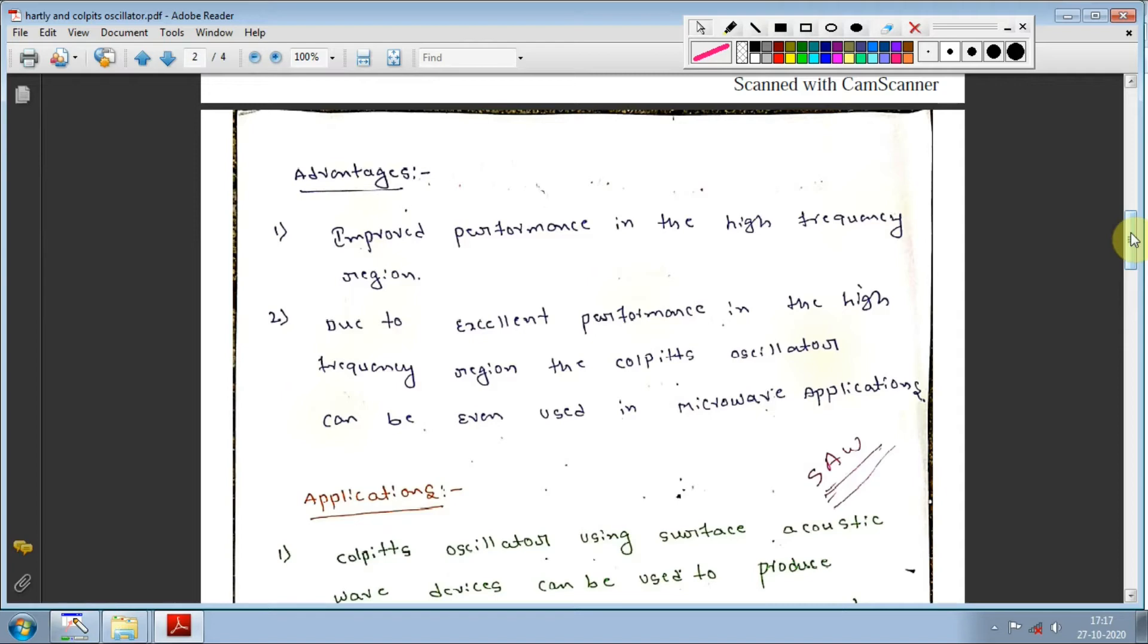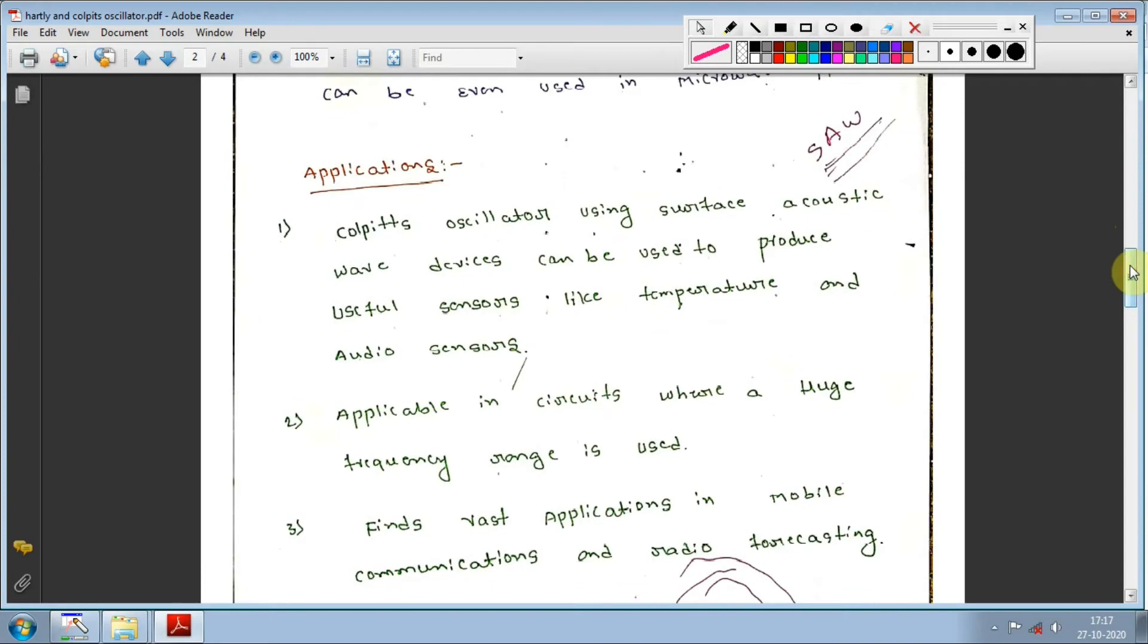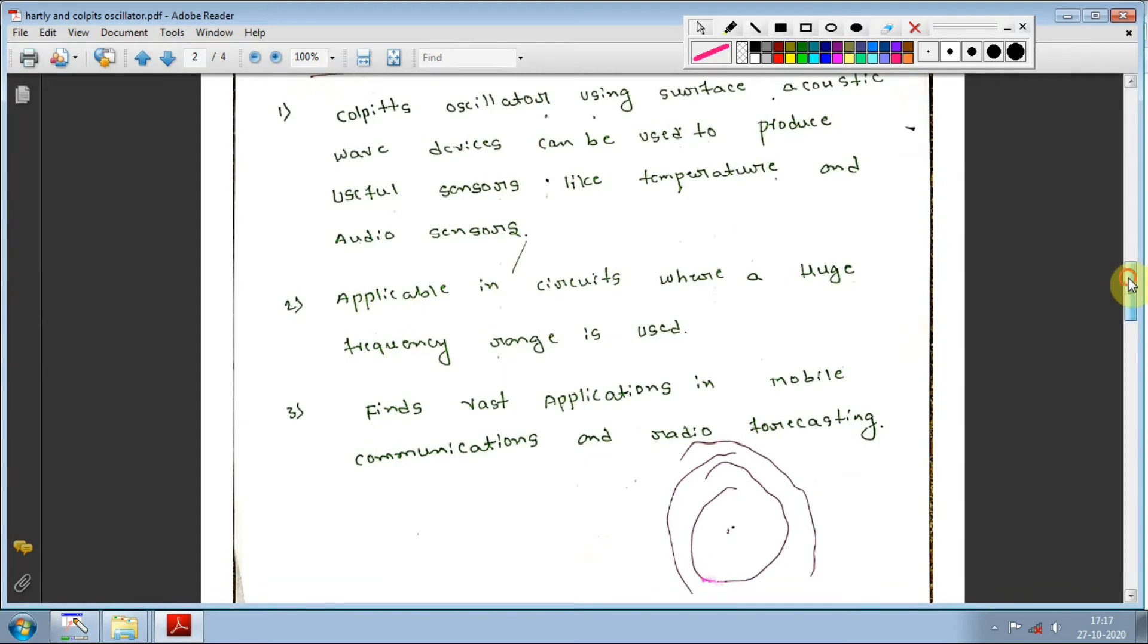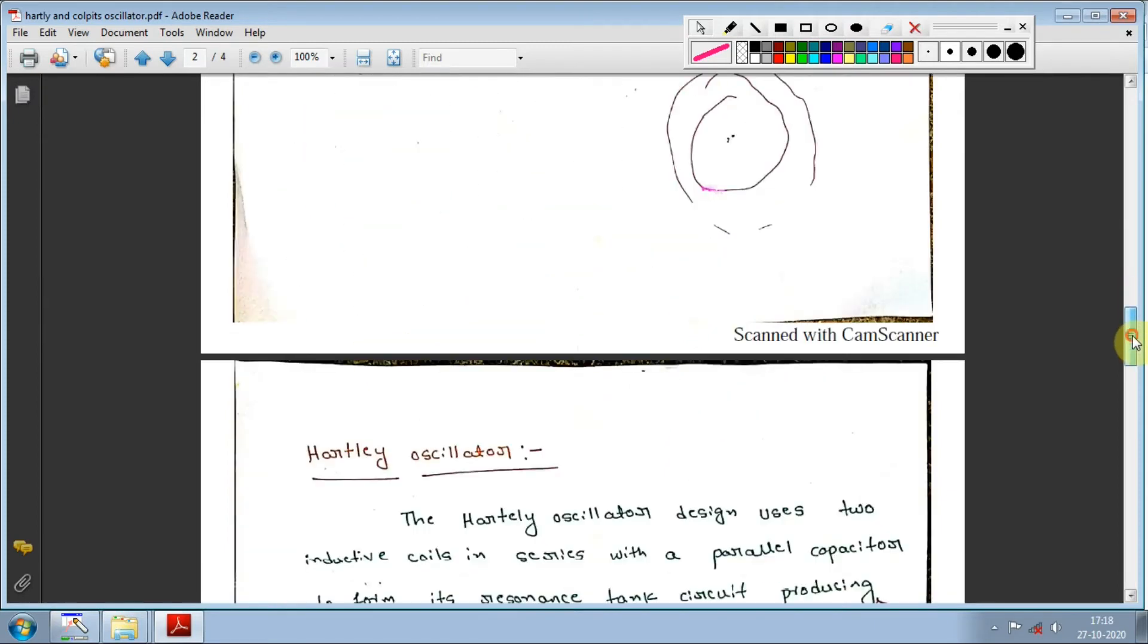Applications: Colpits oscillator using surface acoustic wave devices can produce useful sensors like temperature and audio sensors. It's used in circuits with huge frequency ranges for radio communications. It has vast applications in mobile communication and radio broadcasting.